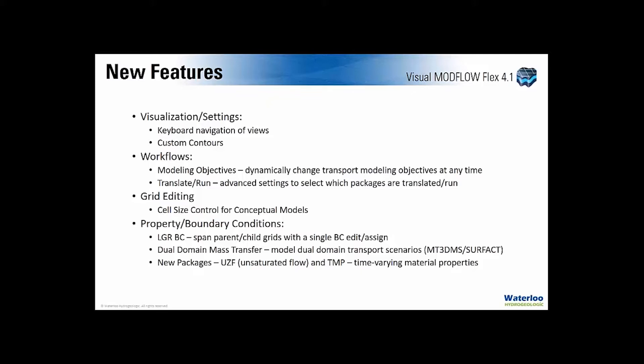In the workflow category, you can now dynamically change your transport modeling objectives at any time — for example, adding dual domain if it wasn't originally considered as an important physical process. You can also translate and run individual packages and toggle translate or run steps on supported packages, allowing use of packages developed outside of Flex, such as the MNW package, as long as they're named the same as your base model file and are in that folder. In terms of grid editing, you can now build grids with exact grid or cell size steps.